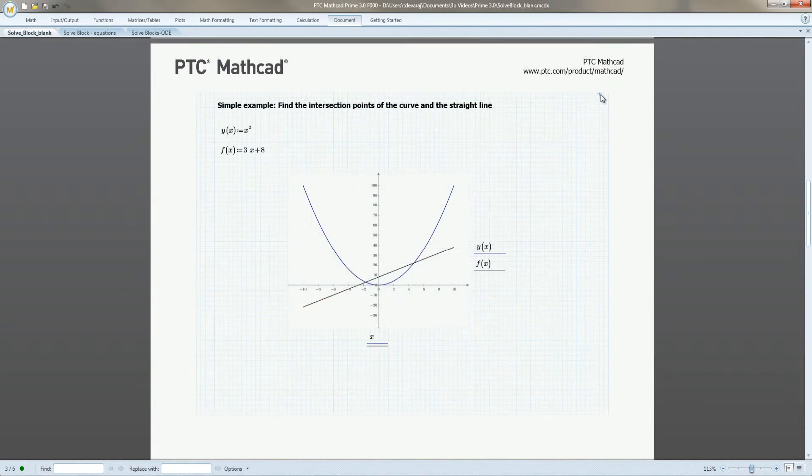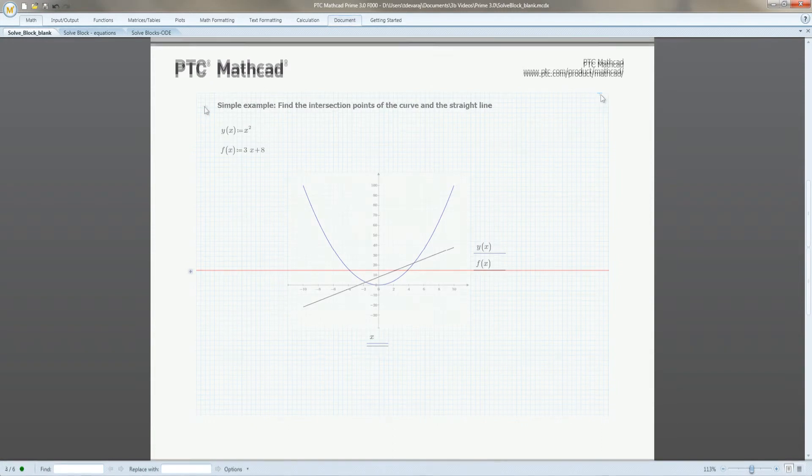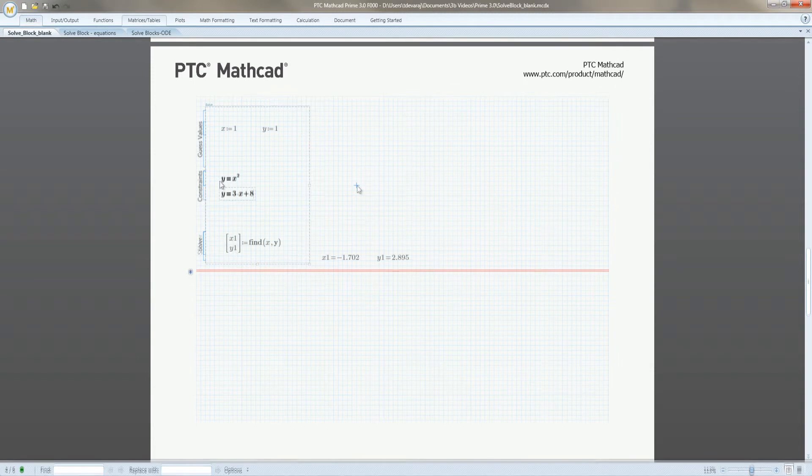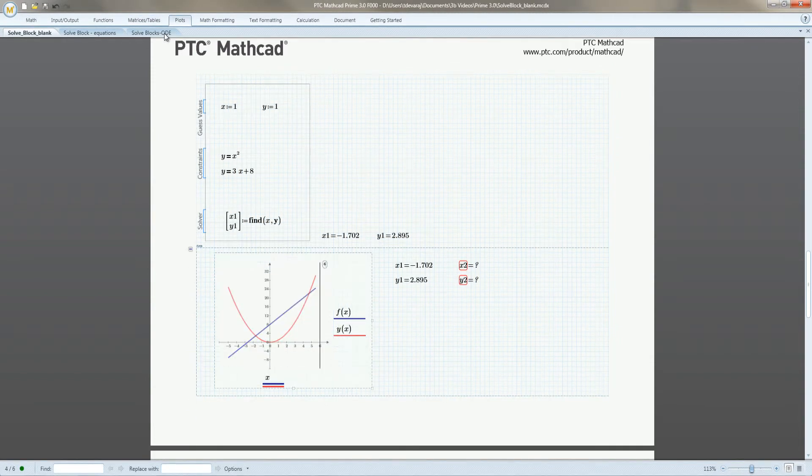To start, let's find the intersection of a parabola and a straight line. We add a solve block and enter the two equations. We plot the results from the solve block and verify the intersection with vertical and horizontal markers.